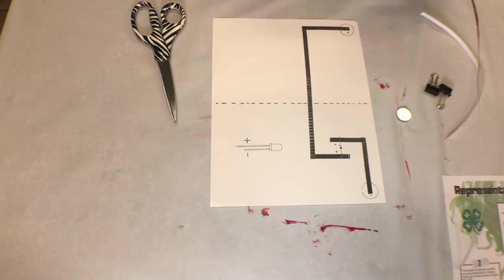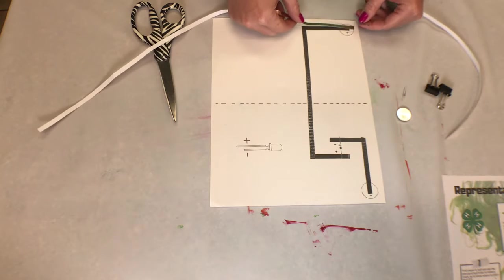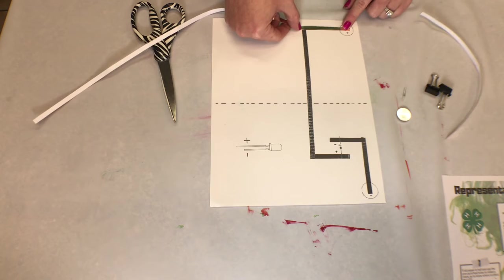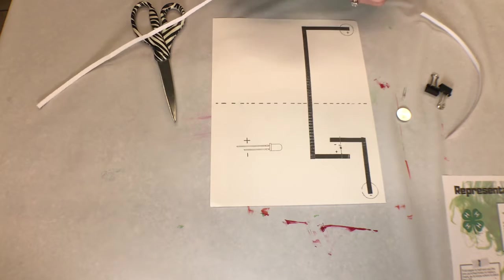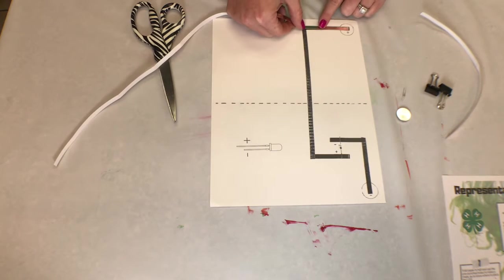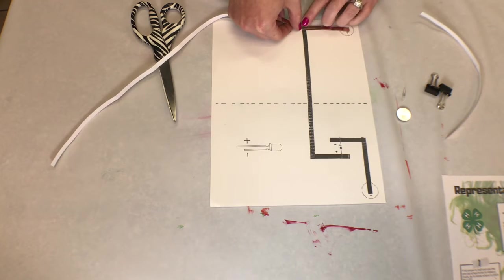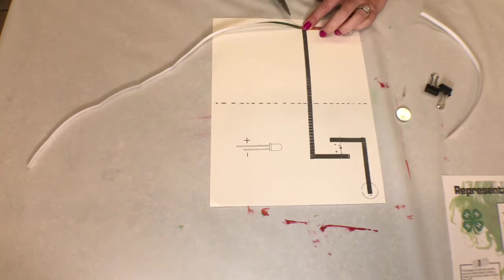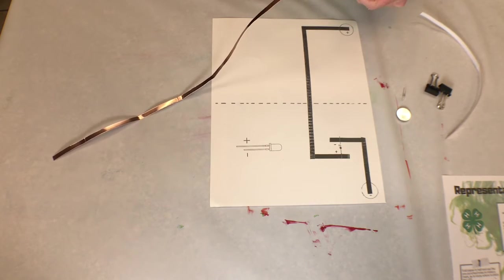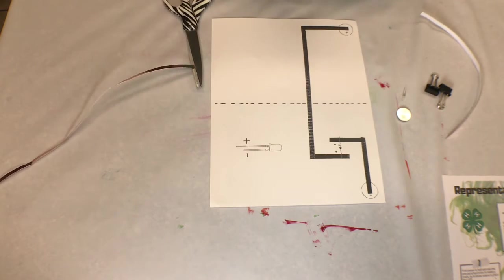What you're going to do is you're going to start here at the top and you're going to take this copper tape and you're going to put it where you see this black line. It's very important that you don't peel all the tape off at the very beginning, because this copper tape will then just knot up in a ball and it will no longer be helpful or useful to you.